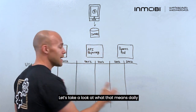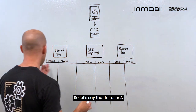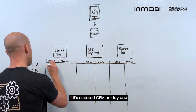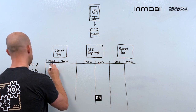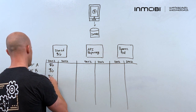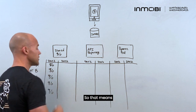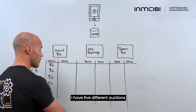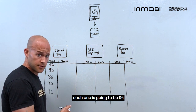Let's take a look at what that means daily. For user A, if it's a stated CPM on day one, it's going to be six dollars across the board for every user. So that means if there are five different auctions, each one is going to be six dollars.